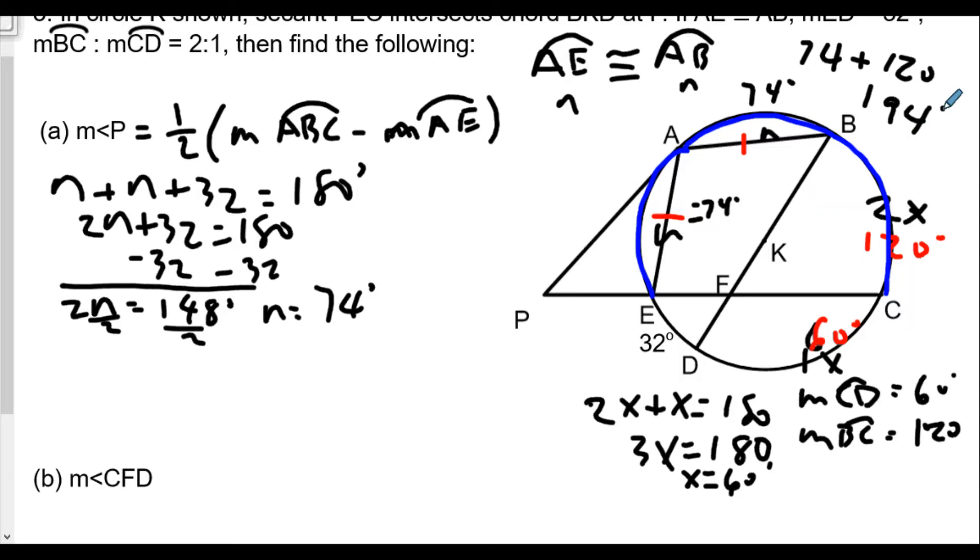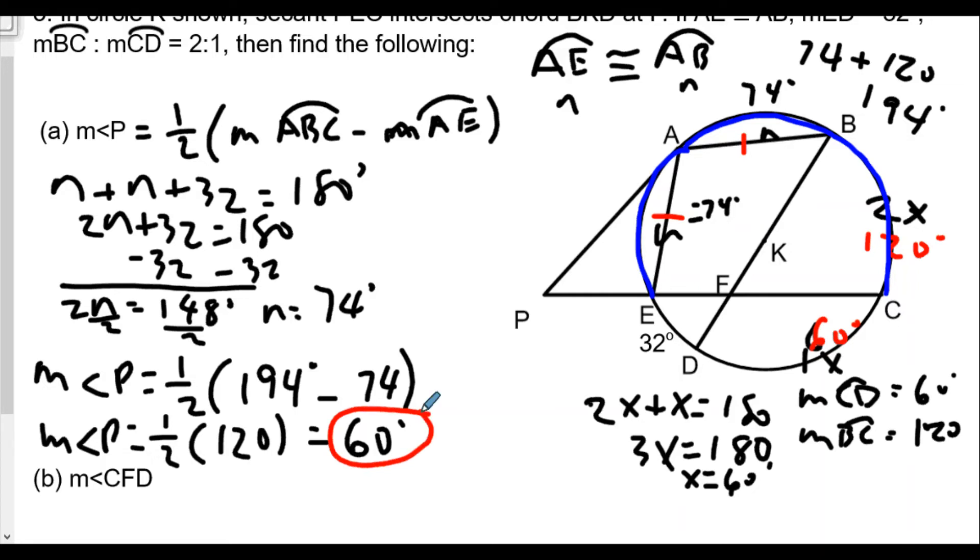So that's the measure of arc ABC. The measure of angle P equals one half times 194 minus 74. Well, 194 minus 74 is going to be 120, so the measure of angle P is half of 120, or 60 degrees. That's our first question.